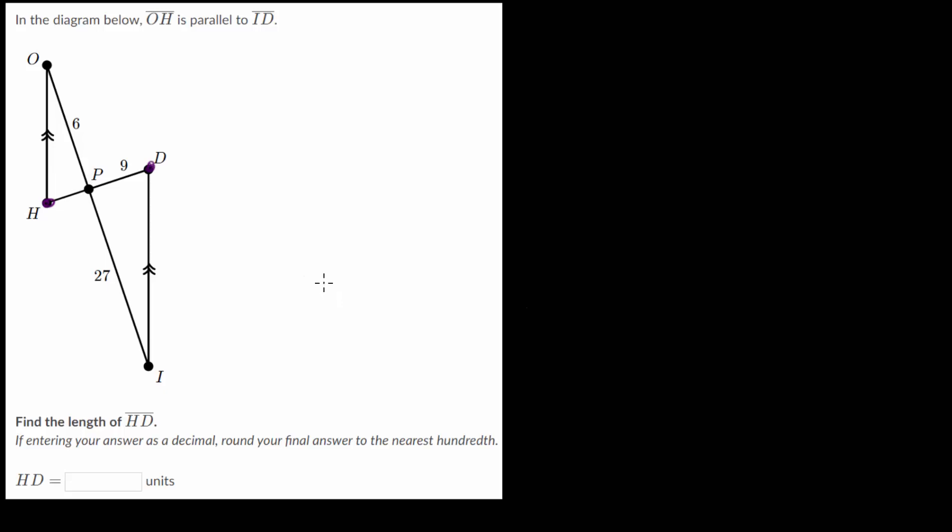And to do this, we can use the properties of similar triangles. Since notice that we have these two triangles, triangle OPH and triangle IPD, and we can prove that these two triangles are similar. Now, to prove the two triangles are similar, we just need to show that they share three sets of equal angles.